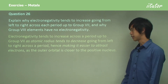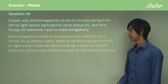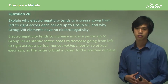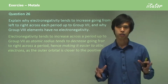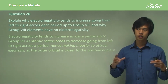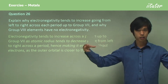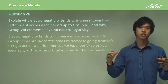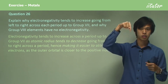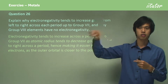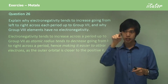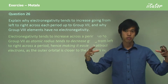Electronegativity tends to increase across a period up to Group 7 because the atomic radius tends to decrease. You might be thinking, we're going across so they're getting more and more protons — shouldn't the radius get bigger as well? Well no, because the radius is based on from the centre of the atom to the outermost electron shell, and as you go along a period you actually only have the same number of shells.